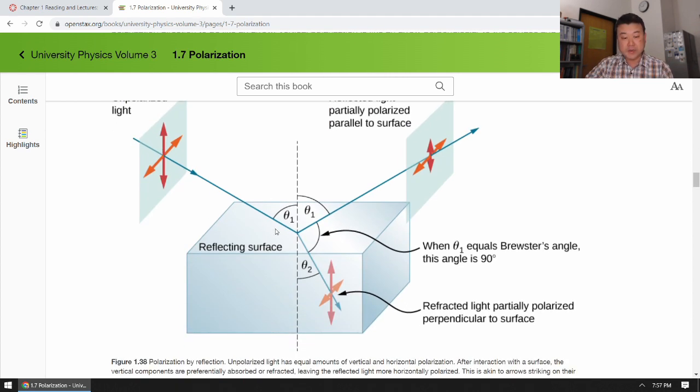It connects to a lot of refraction. Because the angle of incidence at which the maximum polarization happens, 100 percent, is one where the reflected light would be 90 degrees to the refracted light. It has to do with the dipole radiation, all that, that we don't really need to get into.